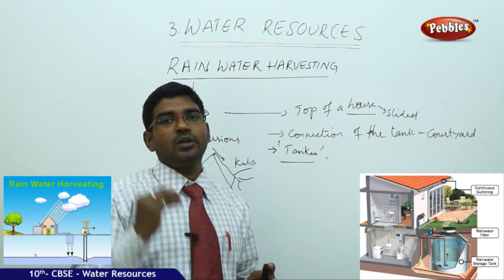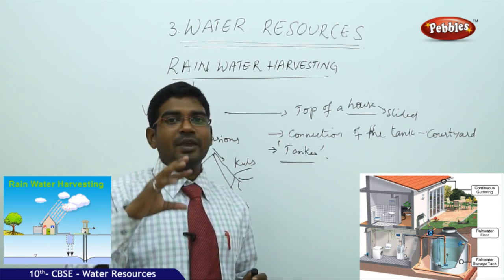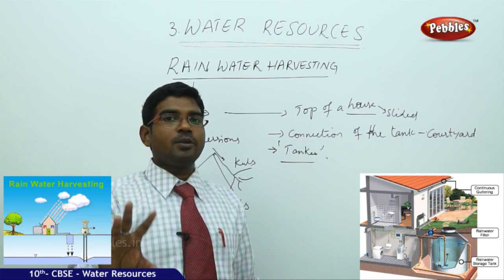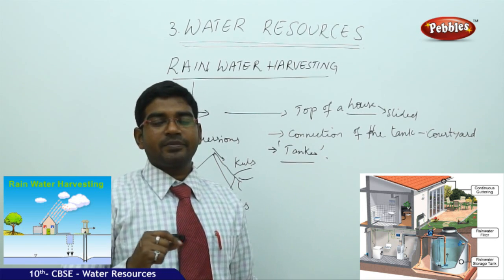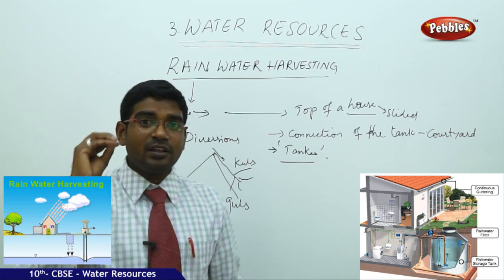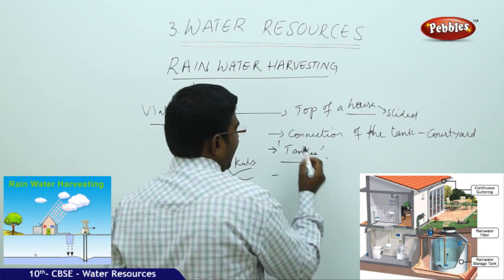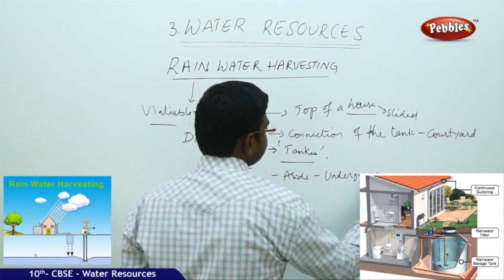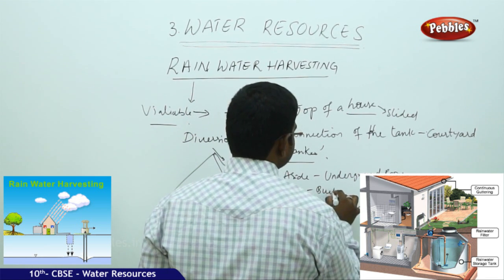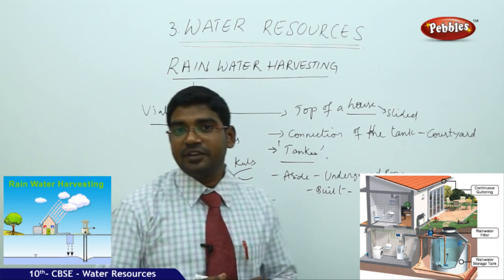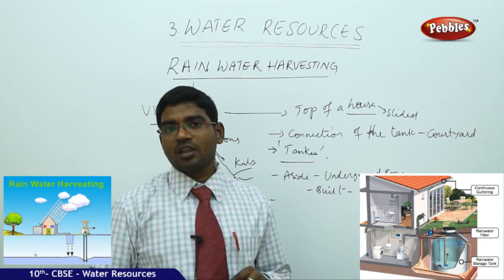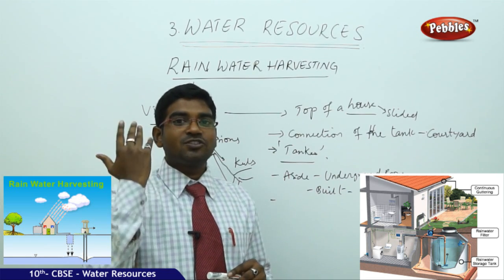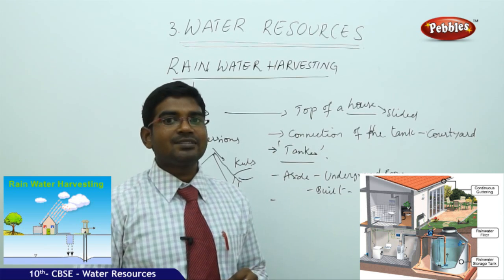The tankas do not collect the first showers of rain, because people believe that the first rains are always impure and may have some impurities mixed in. After the first showers have passed, they collect water from subsequent rains and preserve it under the tankas. Another specialty is that underground rooms are built alongside the tankas to protect themselves from the extreme heat in places like Rajasthan — so there are two benefits: saving underground water and protection from extreme summer heat.